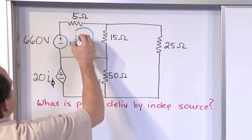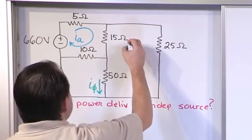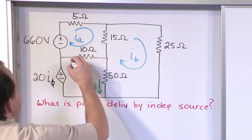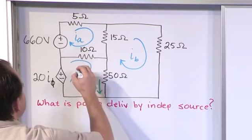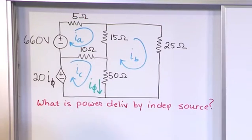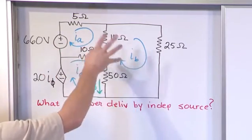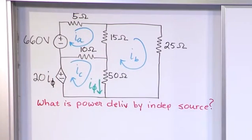There is I sub A. This big mesh here, call it I sub B. And this guy right here, call it I sub C. I'm drawing all my mesh current directions in a clockwise fashion - that's habit and how I'm teaching it, but technically you could go the other direction as long as everything matched.